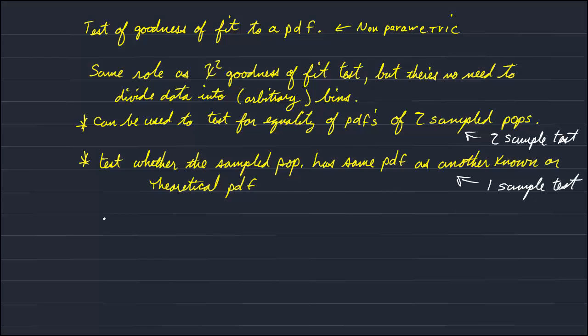So, stating the null hypothesis, the appropriate null hypothesis is that the PDF of population one is equal to the PDF of population two. And again, this could be either another sampled population or it could apply to a theoretical PDF. And then the alternative is that the two PDFs are not equal.